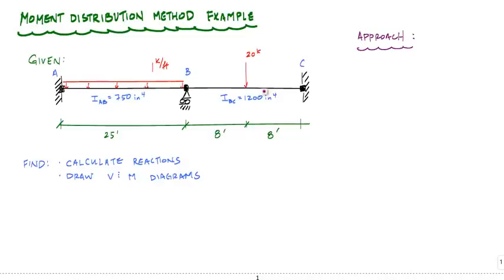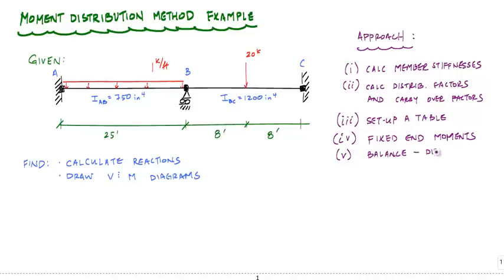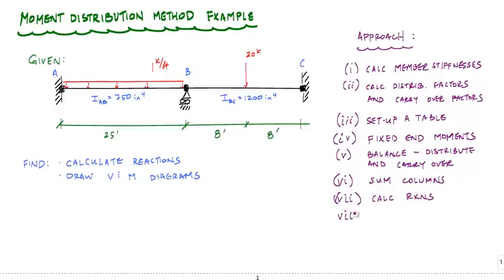The way I like to work these problems is to figure out all the other things first — things associated with distribution factors, carryover factors, and stiffnesses — so I don't have to calculate those later on. First I'll calculate member stiffnesses, then distribution factors and carryover factors, set up a table, calculate the fixed end moments, then run the iterations of balancing, distributing, and carrying over. After that, I'll sum the columns and calculate reactions and draw shear and moment diagrams.